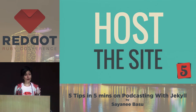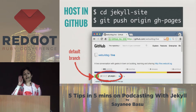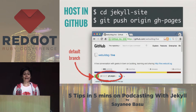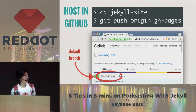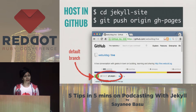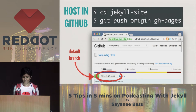Tip number five: host the podcasting website. Jekyll is a static site generator — it will create static sites in terms of HTML, CSS, and JavaScript. The best part is if you host it on GitHub using the branch called gh-pages, GitHub will build it for you, and there you have your podcasting website.